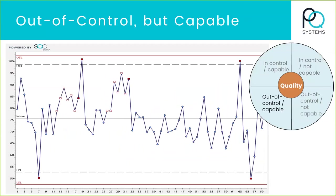The third state is one that some people look at as not that desirable, but others would say everything is in spec or it's capable. I look at this as out of control — I've got a run of points above the mean and points outside the control limits, yet everything is in spec. Now, I'll mention later in the webinar that to talk about capability analysis, your process needs to be in control — that's one of the prerequisites for capability analysis. But let's just say for this analysis that everything is in spec, yet it's out of control.